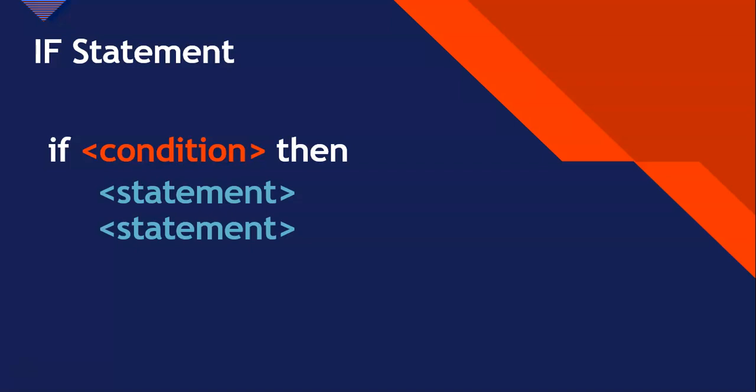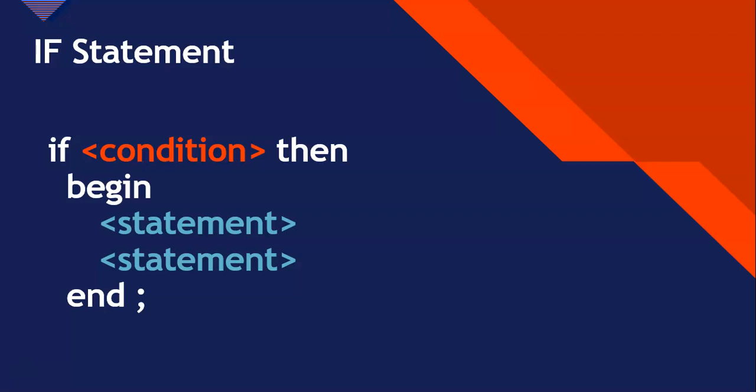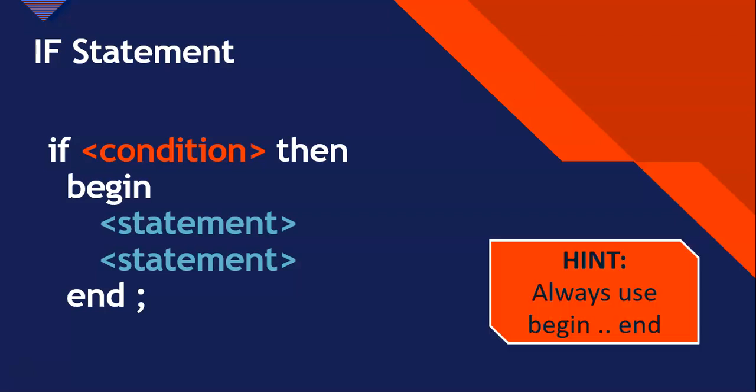What if we want more than one thing to happen when the condition is true? You can put those statements inside a begin and end. Whatever is between the begin and end will be attached to the if statement's true scenario, so all those statements will be executed. My suggestion: always use a begin and end, even if you've only got one statement. Later on you might want to add more to the if statement and forget, and things get messy. Always use begin and end so you can clearly see what is attached to that if statement's condition.